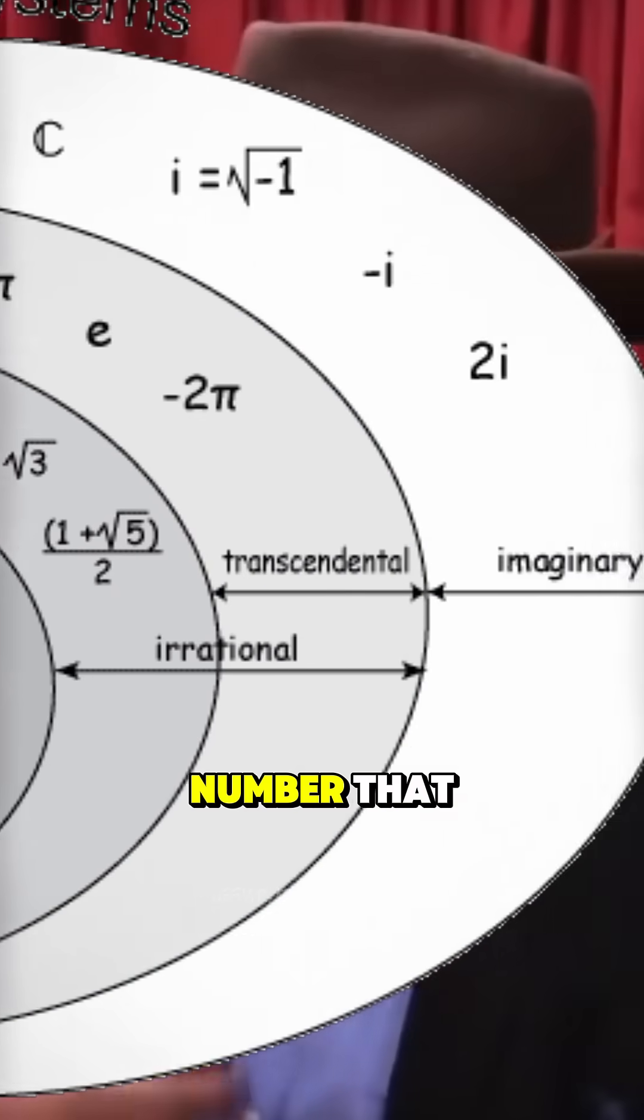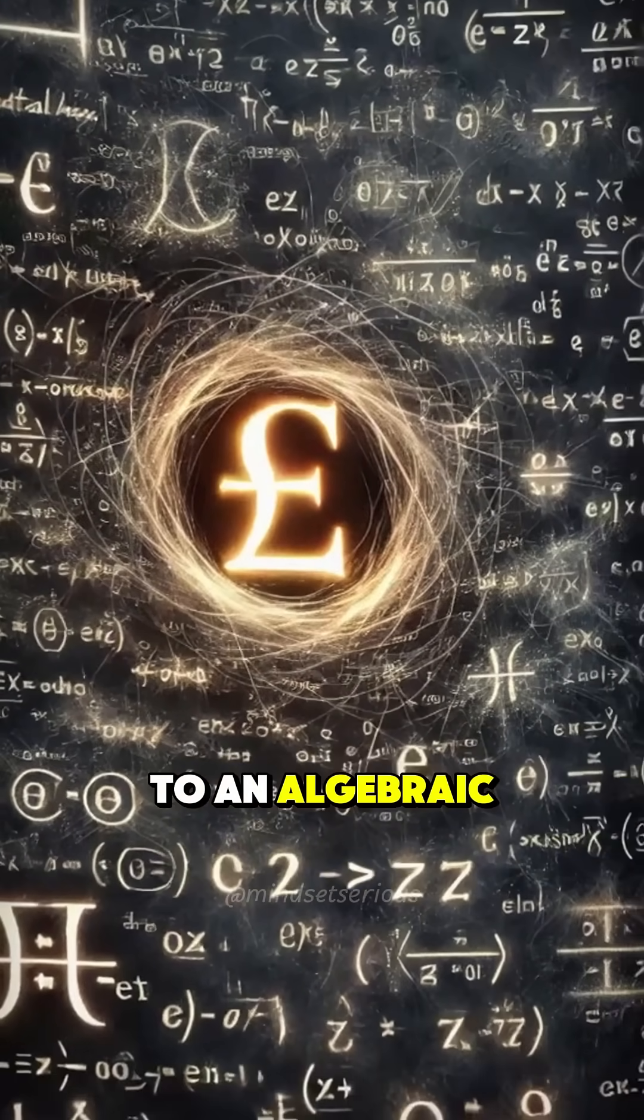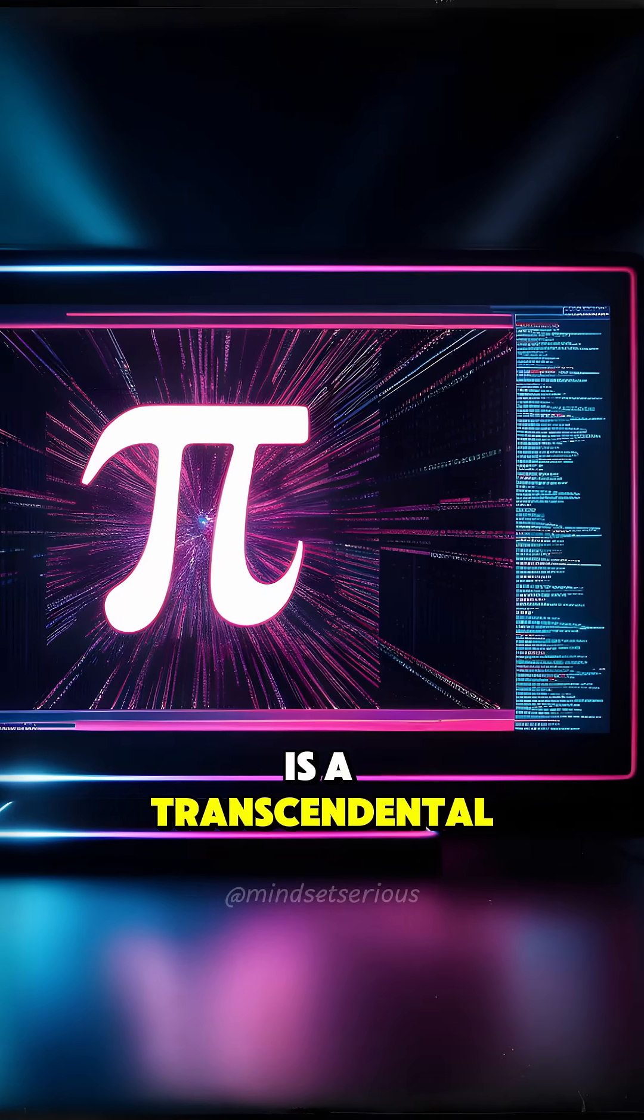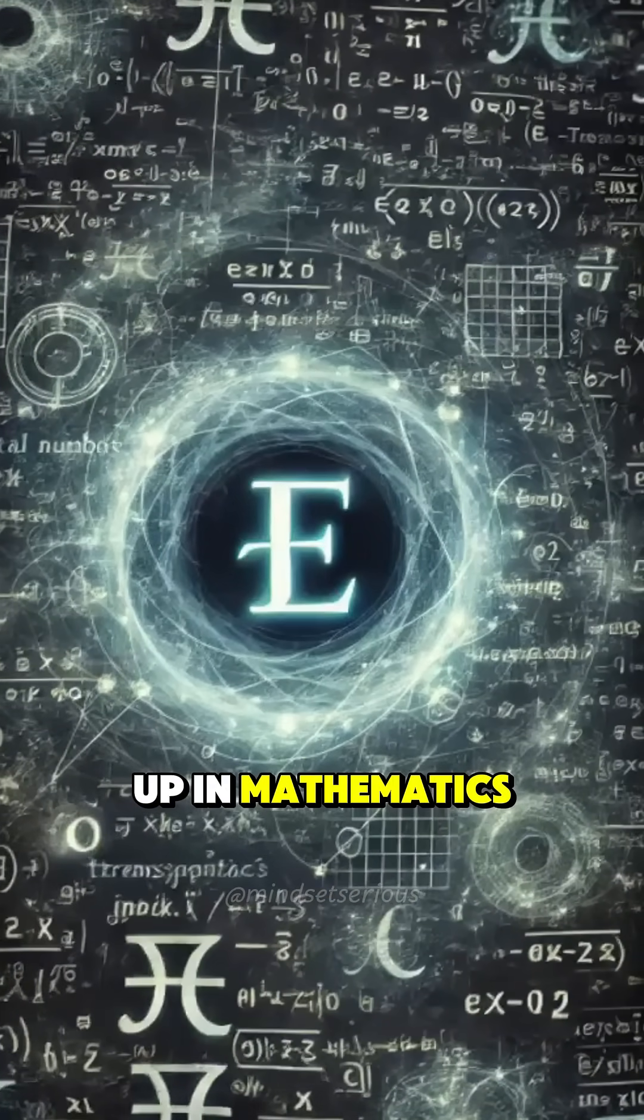What's a transcendental number? So that's a number that you'll never find as a solution to an algebraic equation. So pi is a transcendental number, e is a transcendental number. These are magic numbers that show up in mathematics.